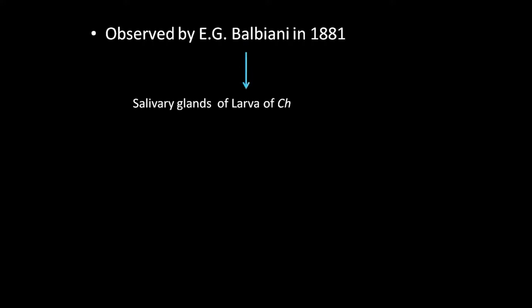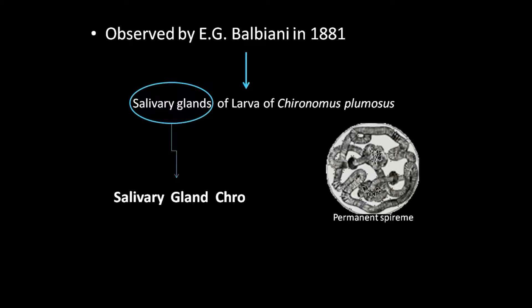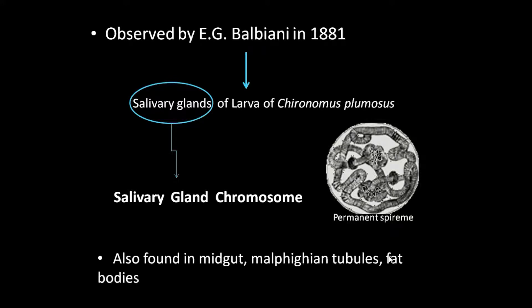Polytene chromosomes were first observed by a scientist in 1881. He observed these chromosomes in the salivary glands of the larvae of Chironomus plumosus. They are also seen in interphase nuclei of cells in the midgut, Malpighian tubules, fat bodies, and trachea.